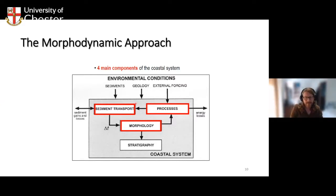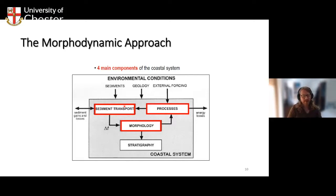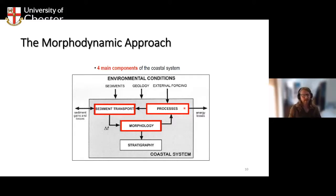It's important to note that there's a feedback mechanism between all of these components. If we change any one part of the system it has knock-on effects throughout. For example, if waves become bigger due to climate change, that changes sediment transport patterns, which changes erosion and deposition and alters the morphology. And changing those features in turn feeds back on the processes - shallower areas cause waves to break differently, again altering sediment transport - creating a continuous feedback loop.